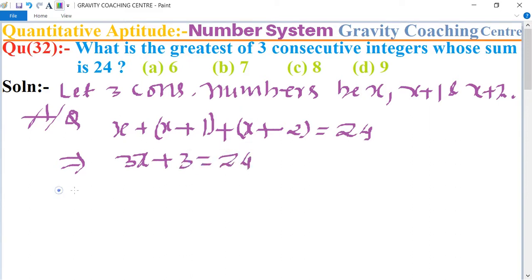This implies that 3x equals 24 minus 3, which implies 21. So dividing by 3, 3 sevens are 21, so x equals 7.